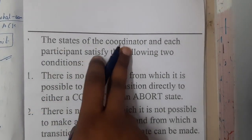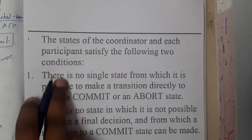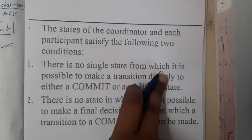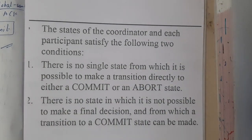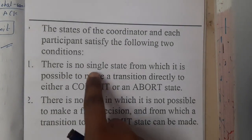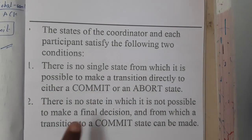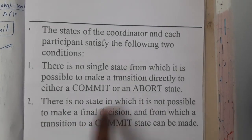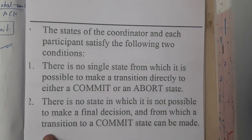The states of the coordinator and each participant satisfy the following two conditions. First, there is no single state from which it is possible to make a transition directly to either commit or abort — so from any state you cannot directly move to commit or abort. Second, there is no state in which it is not possible to make a final decision and from which the transaction can transition to commit state.